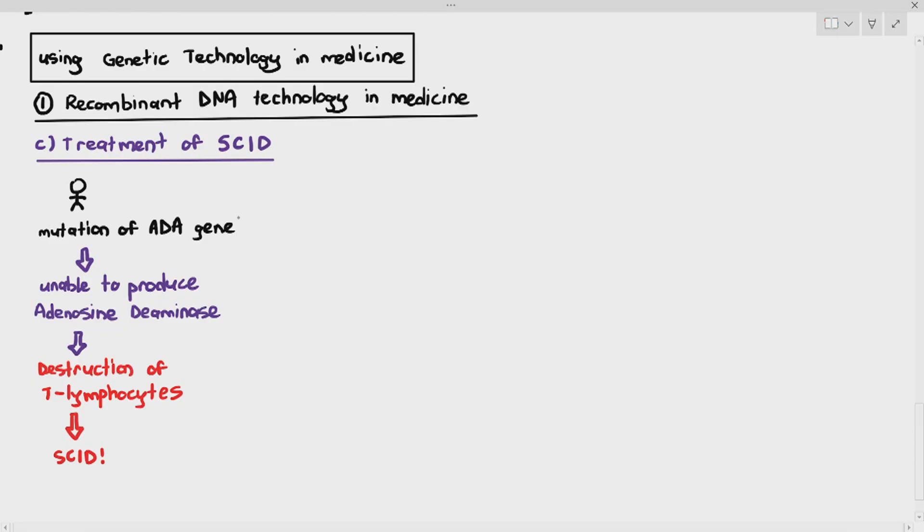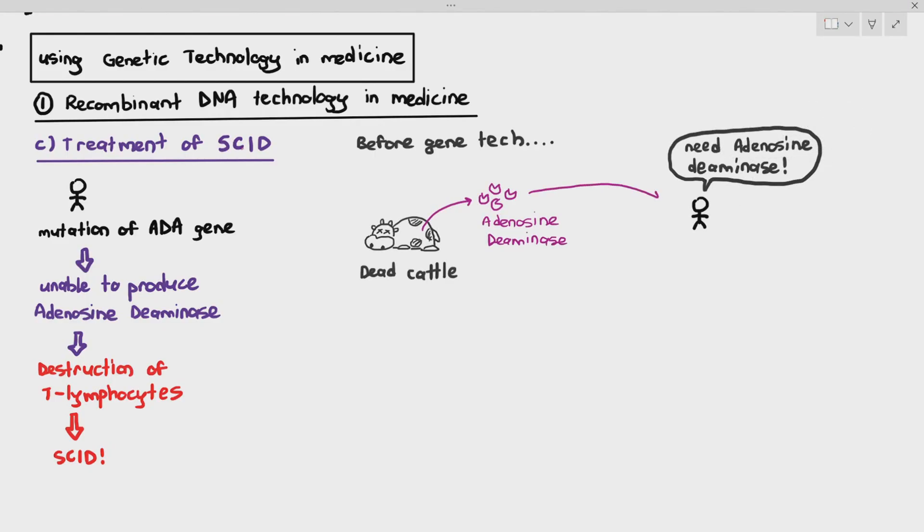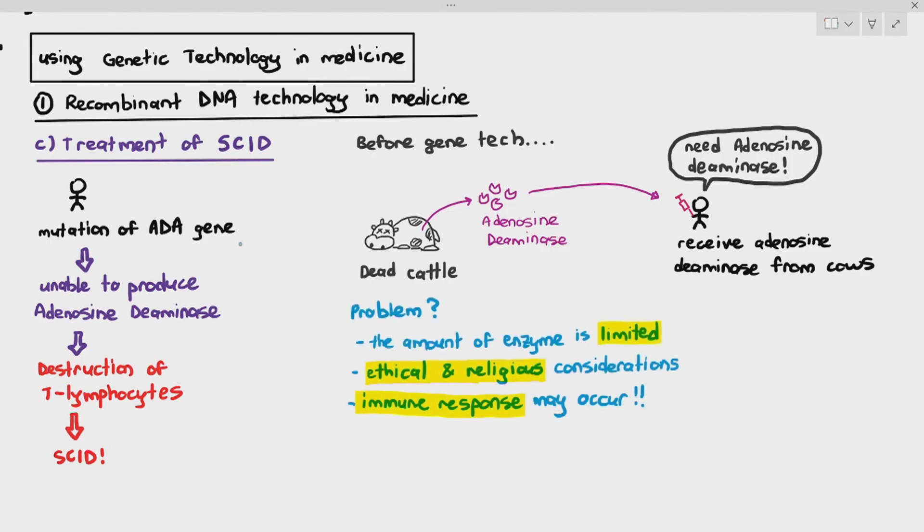So to treat this disease, before gene tech was a thing, the infant who needed that enzyme, because they are not able to produce that enzyme, adenosine deaminase. Where do we get those enzymes from before gene tech? We would get it from dead cattle, usually. And again, injecting the dead cattle enzymes into the infant would have problems. The amount of enzyme is limited, there's ethical and religious considerations. As I've mentioned earlier, using animal products, an immune response, because it came from animals, it may be considered foreign by our lymphocytes, and the lymphocytes may destroy the enzyme. Not that they have many lymphocytes to begin with, but immune response may still occur.